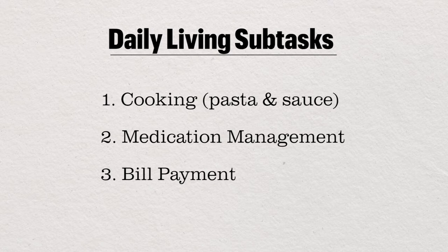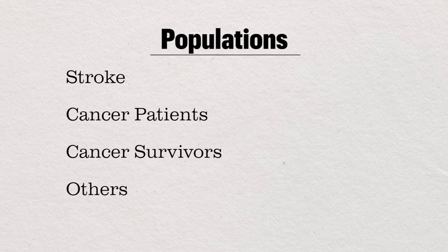For example, instead of making oatmeal on the stove for the cooking task in the EFPT, the EFPTE requires the client to make pasta and sauce and attempt to have them finish at the same time. Instead of paying two bills in the EFPT, the EFPTE requires the client to pay all their bills for a month.